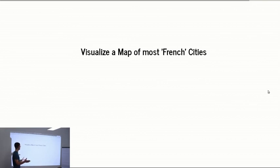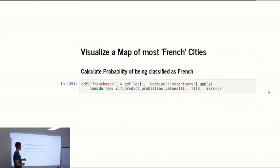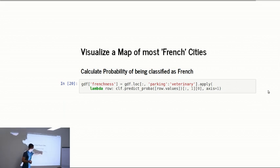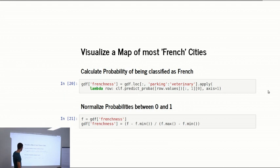Let's do a visualization of the map of the most French cities. We have our dataset from Swiss cities, French cities, Austrian cities, and German cities, and we want to visualize how French they are. We're going to use our Frenchness score. We use the logistic regression we trained before — our classifier has a function called predict_proba, and you can say how much is the probability that it's class A or class B. Class B is French, so we take one for French. We calculate this for each feature vector in our whole dataset, and then we normalize the Frenchness.